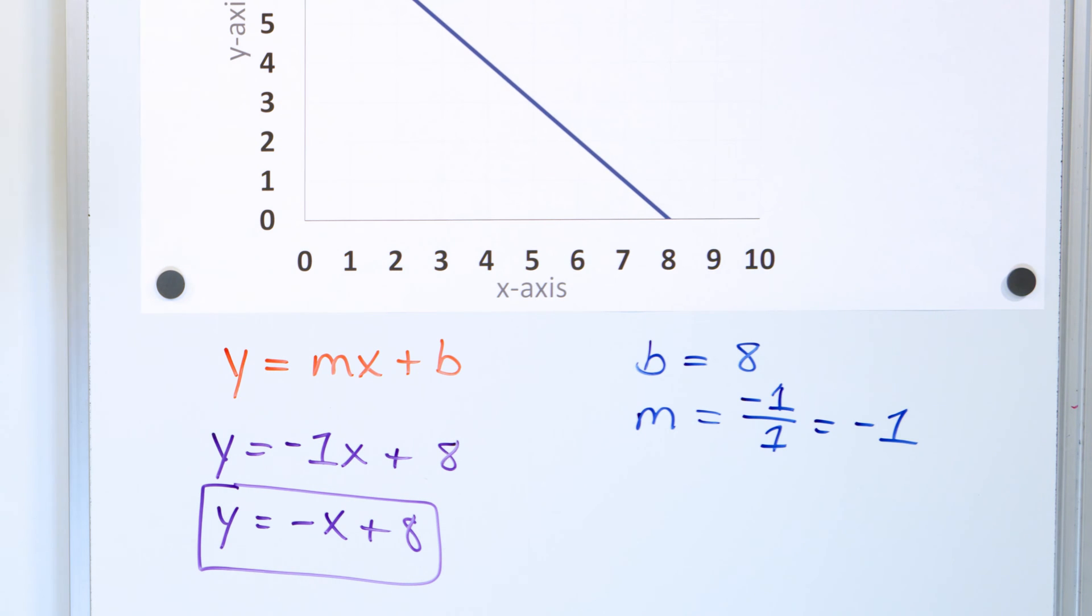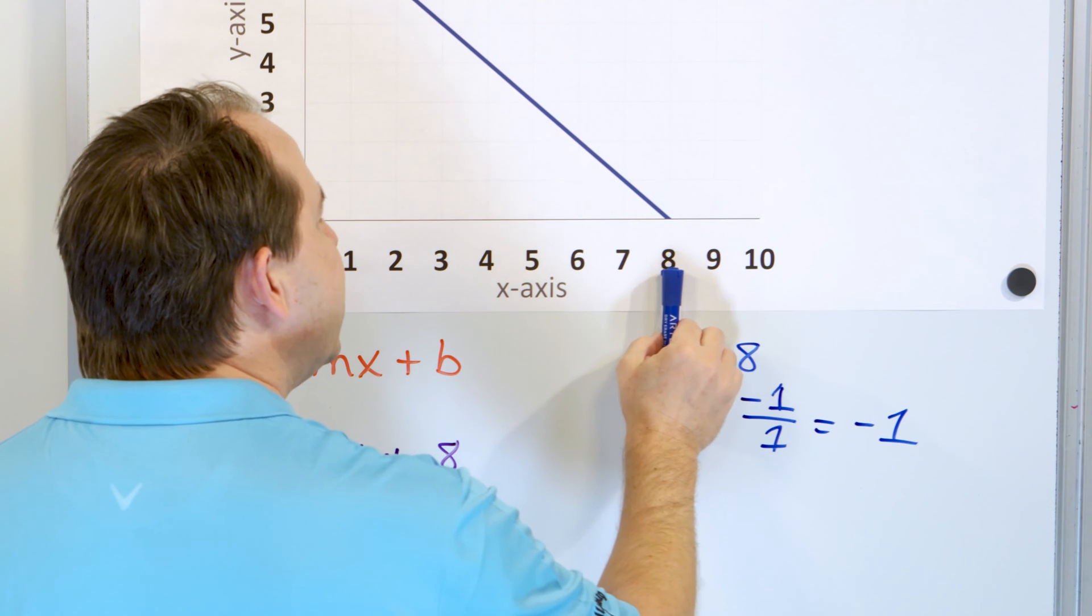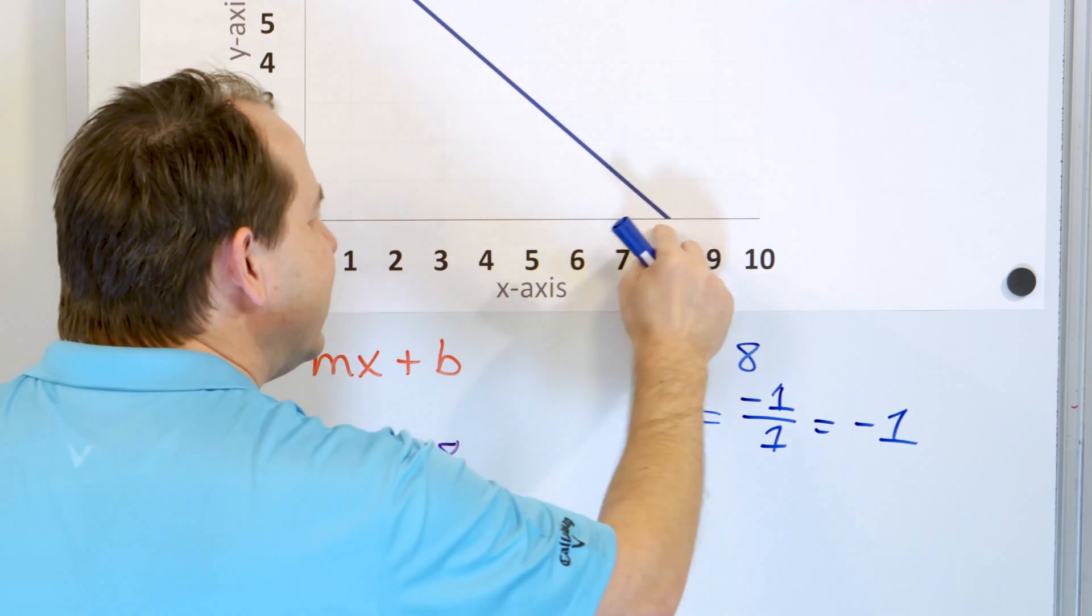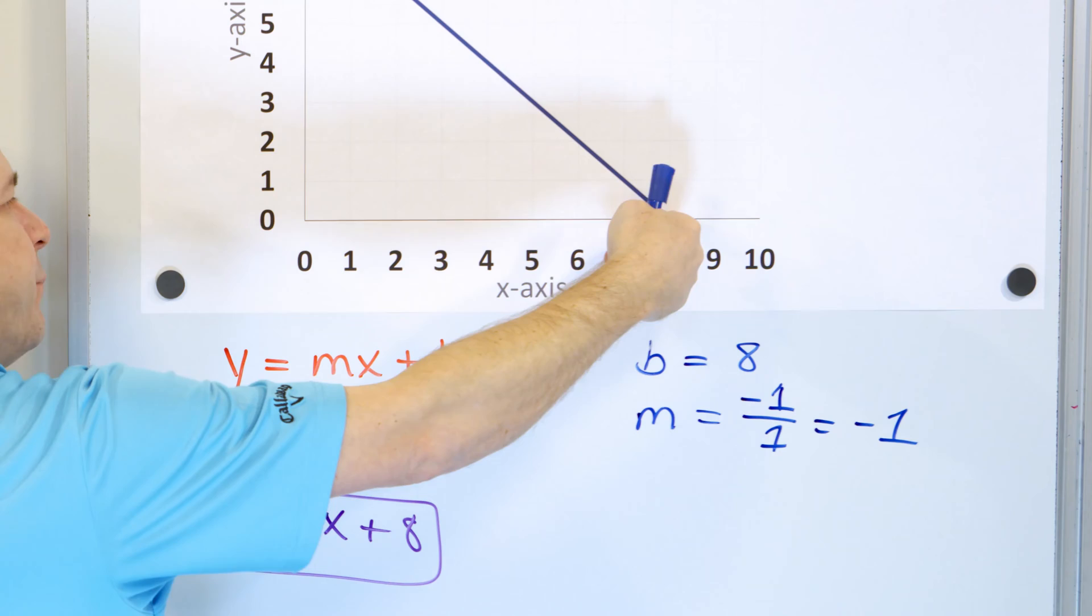Now, it's always a good idea to at least check one or two points on the line just to see. So let's say what happens when x is equal to 8? If we put an input in of 8, what happens? Well, if I put an 8 here, I have negative 8 plus 8, which means I get a y value of 0. So when x is 8, y is 0, so this is a point on the line.